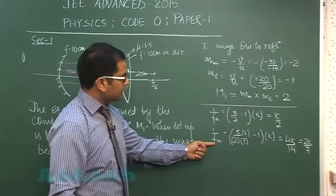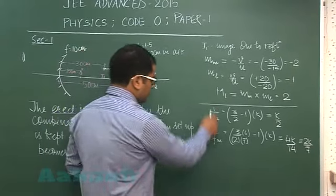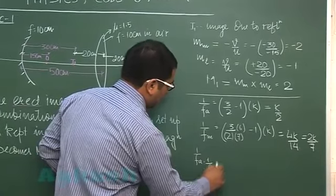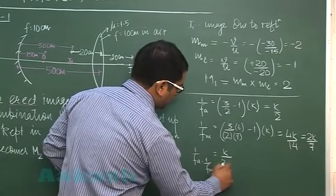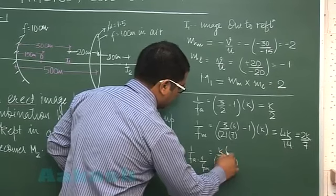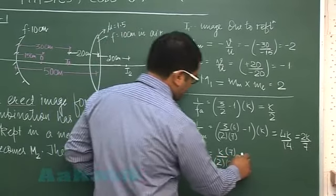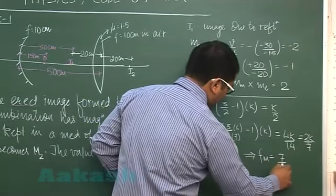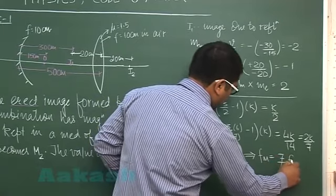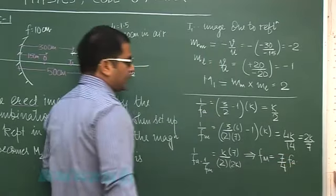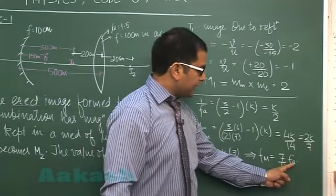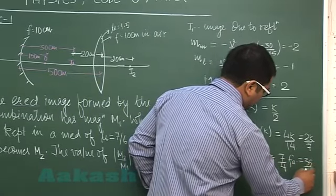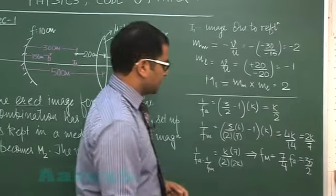This gives the relation of focal length in medium and focal length in air. I'll divide both: 1/FA and 1/FM, which is (k/2)/(2k/7). This implies FM = (7/4)FA. Since focal length in air is 10, FM = 35/2 centimeters would be the focal length in medium.